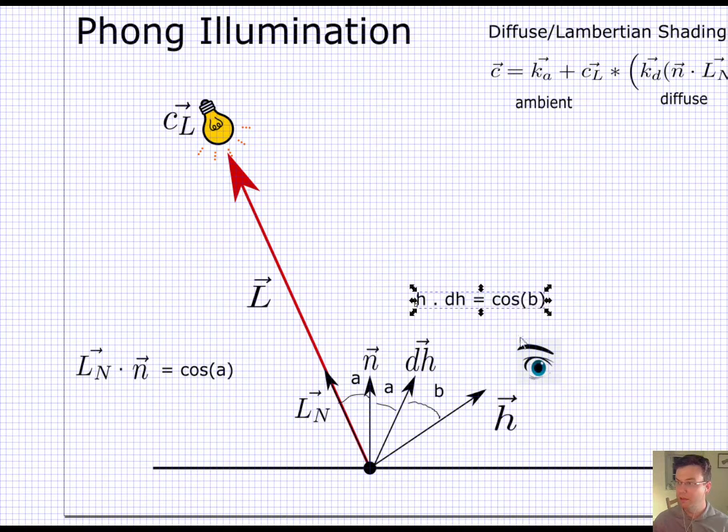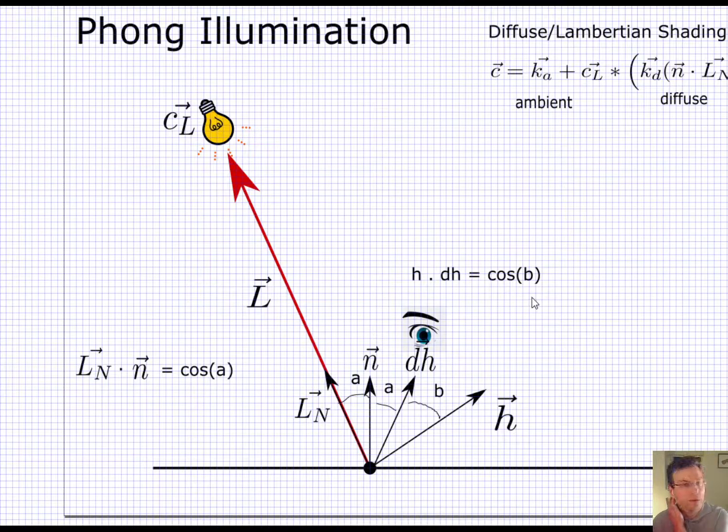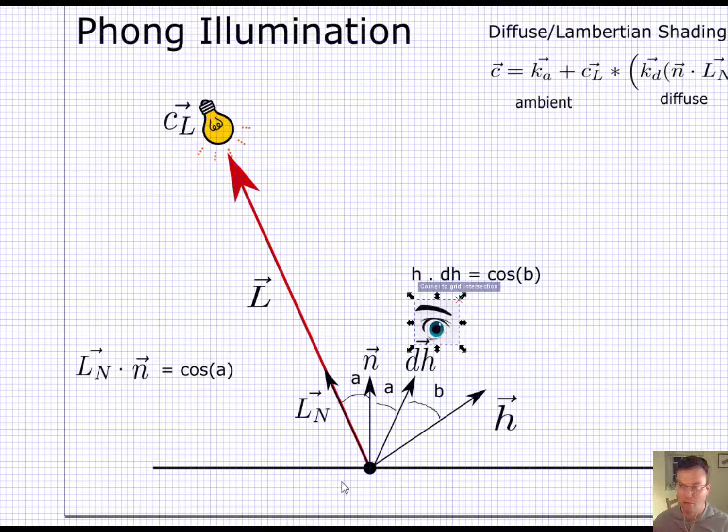So if b is 0, if I'm perfectly incident with this direction, so if h and dh coincide, then the cosine of 0 is going to be 1. So I'm going to say I get all the specular light. So we call this specular as well.